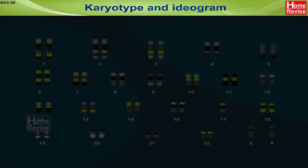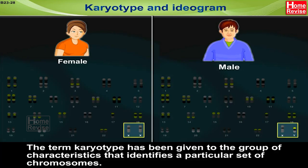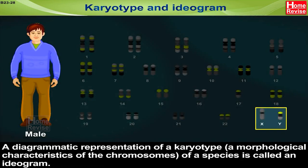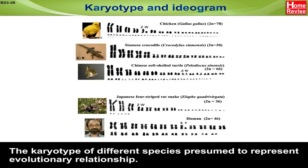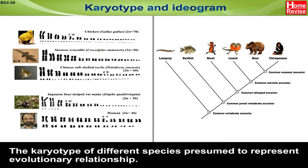Karyotype and Ideogram: The term karyotype has been given to the group of characteristics that identifies a particular set of chromosomes. A diagrammatic representation of a karyotype — that is, a morphological characterization of the chromosomes of a species — is called an ideogram. The karyotype of different species is presumed to represent evolutionary relationships.